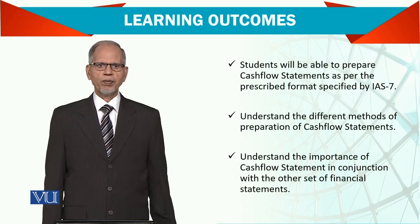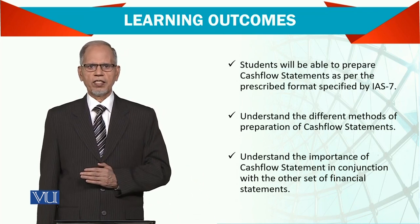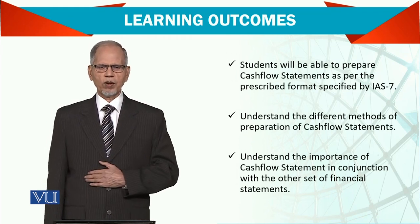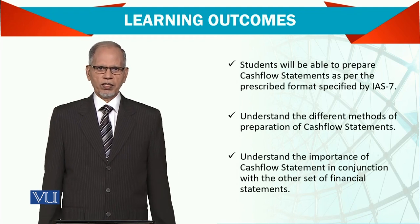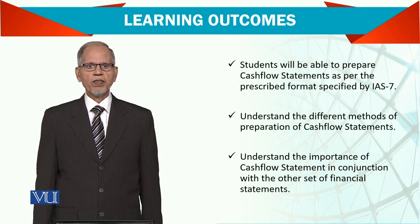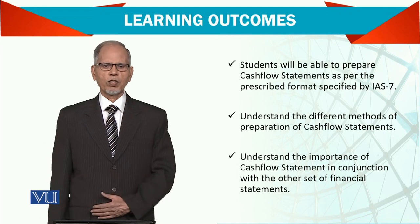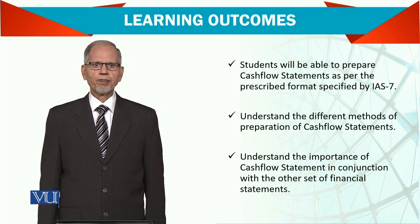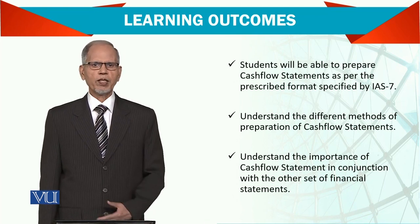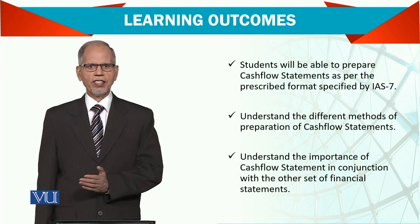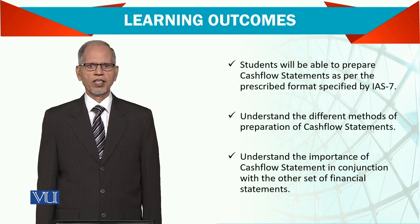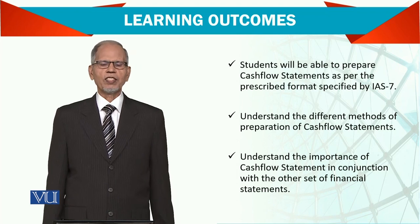The third activity is financing activities. Here we see how much money has been put in by shareholders or lenders, and how much we paid back to shareholders and lenders. Dividends paid to shareholders are reported here, and any money brought in by shareholders is also reported here. However, if shares are issued without receiving cash, that will not be reported here, because although share capital is increasing, there is no cash flow involved.